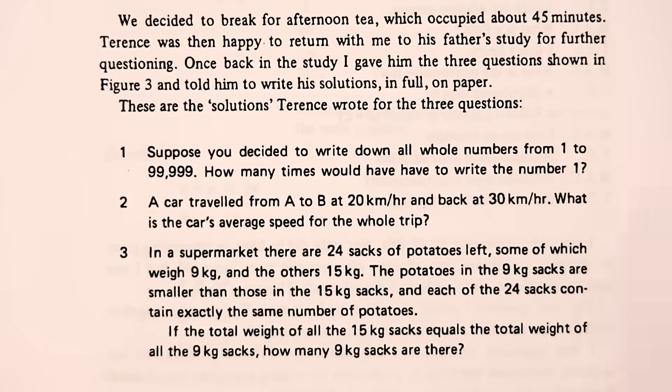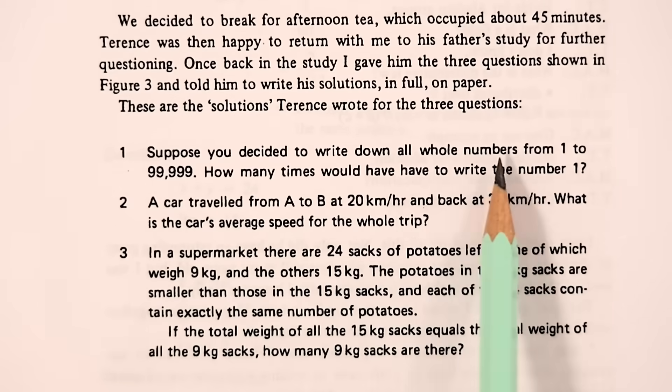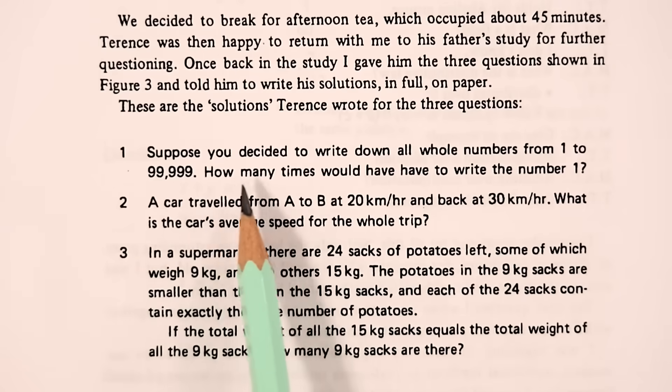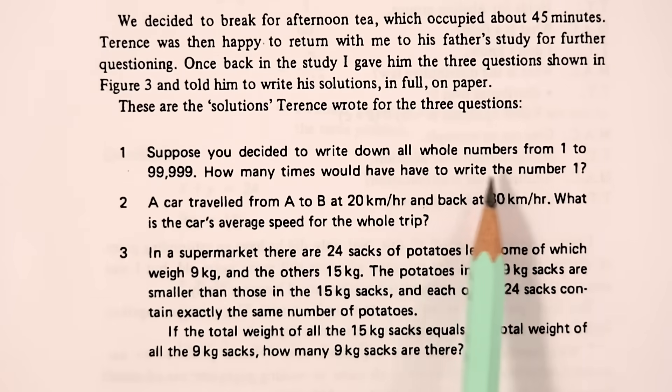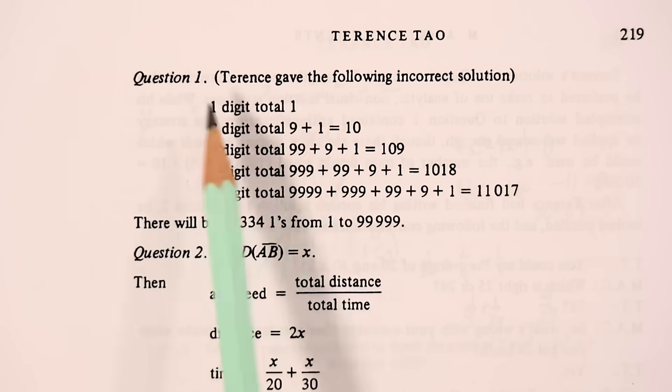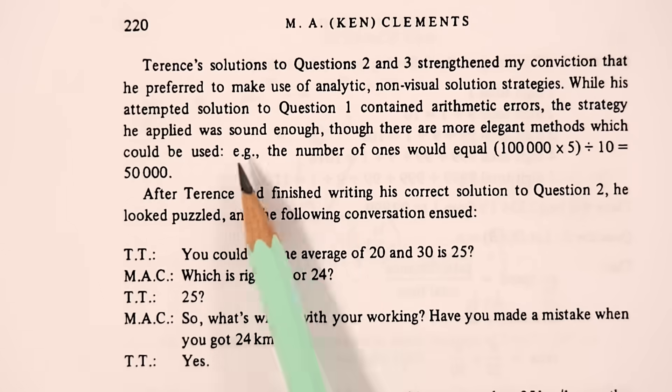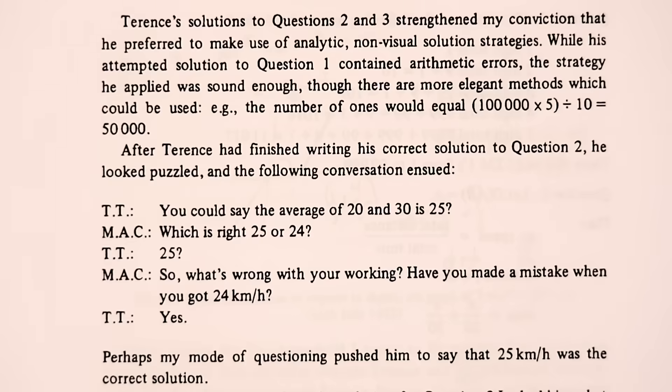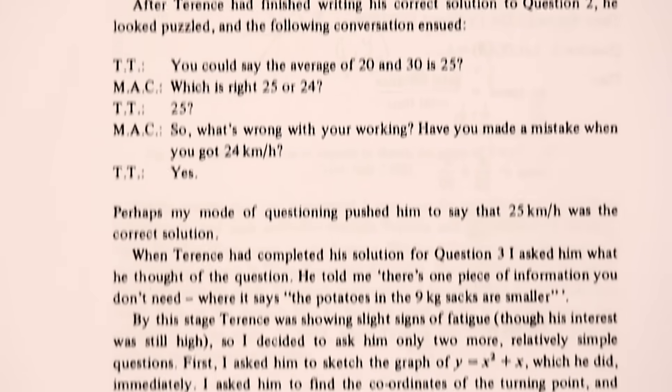The next set of questions given to Terence include, suppose you decided to write down all the numbers from one to 99,999. How many times would you have to write the number one? This one Terence actually gave an incorrect solution to, although still an answer that shows plenty of critical thought about the question. Apparently, the correct solution here is 50,000. He struggled a little bit with a few more of these questions.